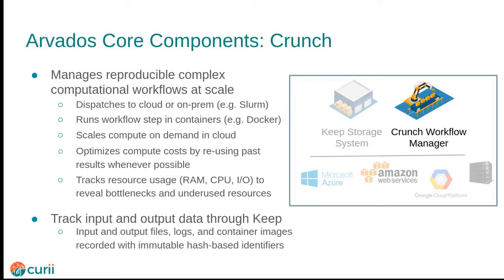The Arvados compute layer is called Crunch. Requests to run a compute job are submitted through the Arvados API. This includes the command line to run, the container image to use, required hardware resources, and what input files are required by the job. Crunch handles translating that job request into an HPC batch submission, or on the cloud, by using the cloud provider's APIs to request a new compute instance on demand, running the job, and then shutting down the compute instance when it is no longer needed. Crunch keeps a record of every job that has been submitted, and all of the inputs, outputs, and container images are Keep collections identified by portable data hashes. The same portable data hash means you have the same file structure and content.